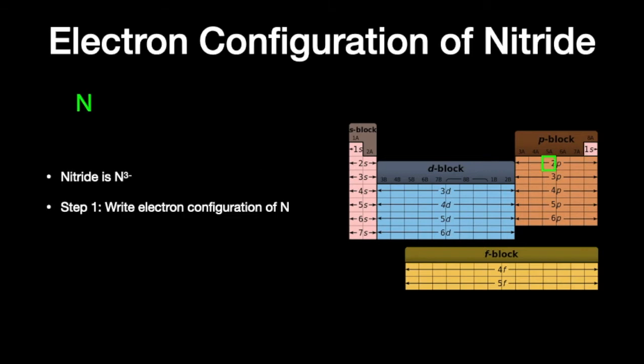Let's look at a few examples. Nitride is N with a negative 3 charge. First, we write out the electron configuration for nitrogen. We build it up moving from top to bottom and left to right in the periodic table. So it's 1s2, 2s2, and 2p3 — and we stop there because that's where nitrogen is located in group 5.